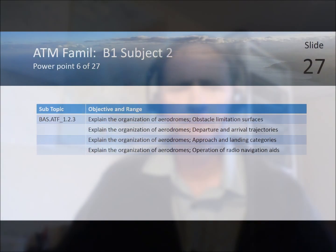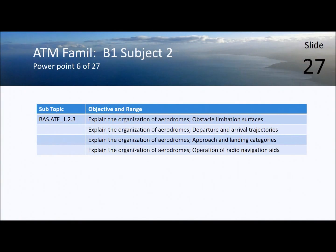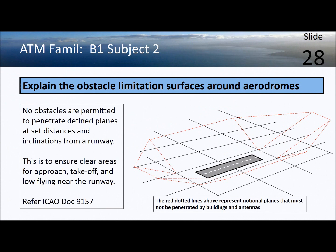The next section in this lesson is on aerodrome organization — aerodrome being another word for airport. The obstacle limitation surfaces around aerodromes are angled planes around the runway through which no obstruction should penetrate. This is to ensure the safety of aircraft on approach, during missed approaches, or go-arounds.